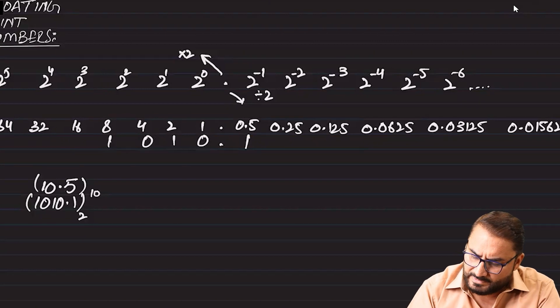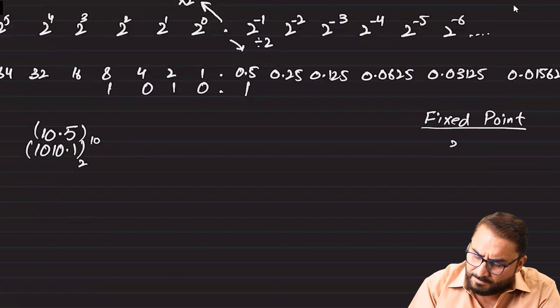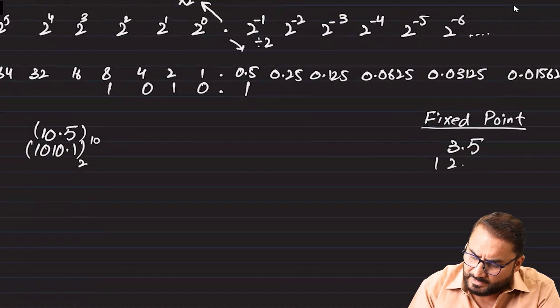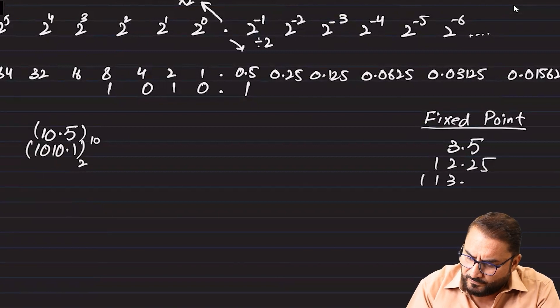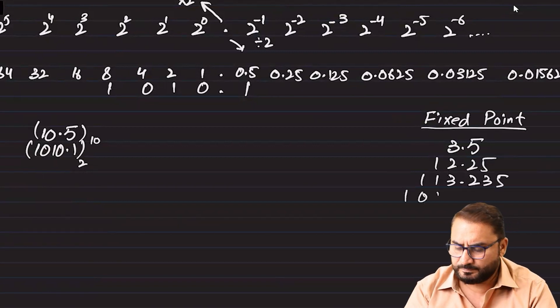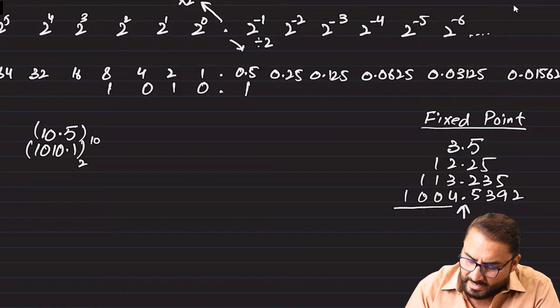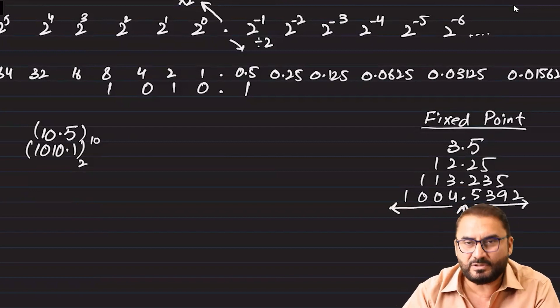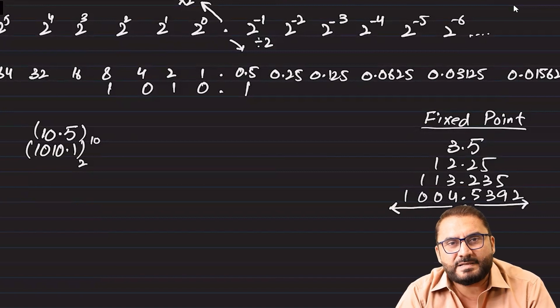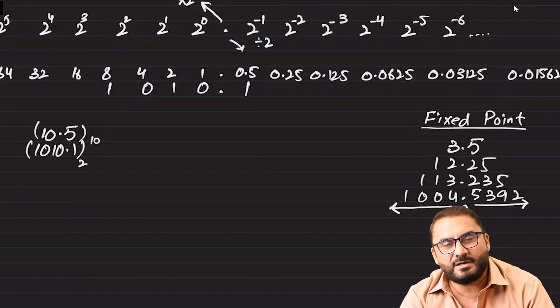Now one thing, let's talk about fixed point. Fixed point numbers, let's say you have 3.5 or 12.25 or 113.235. You can see that the point is fixed at its place. Integers are growing towards the left towards their most significant number, and decimals are actually increasing on the right. So point right side decimals are left aligned towards the point, point left side integers are right aligned towards the point.